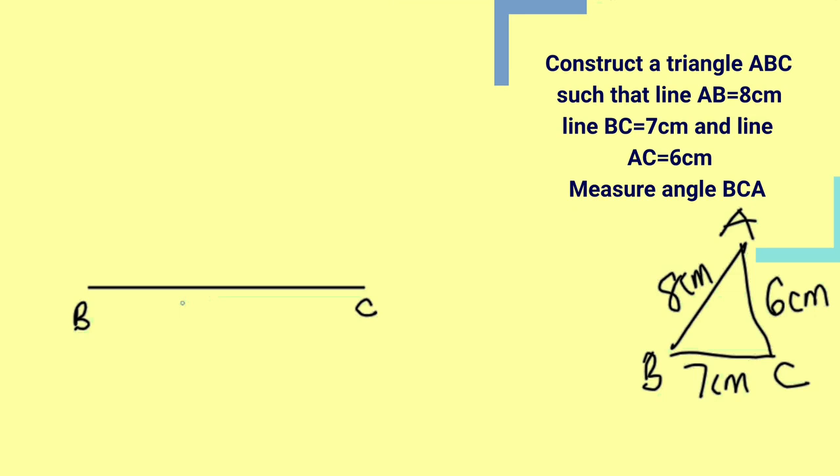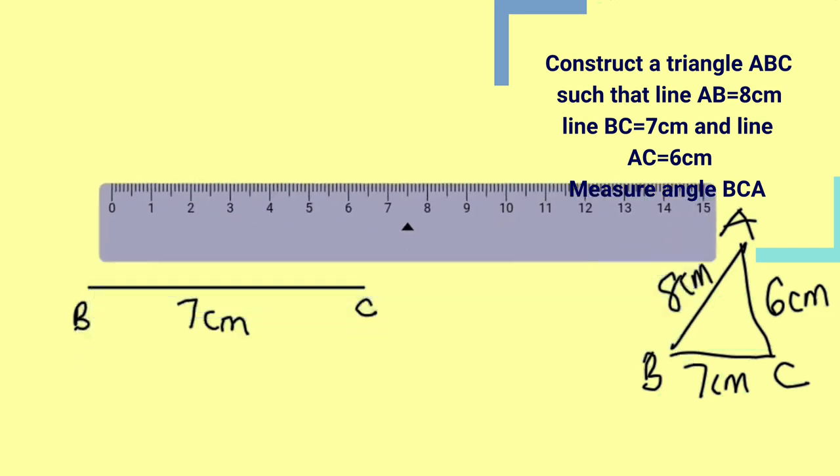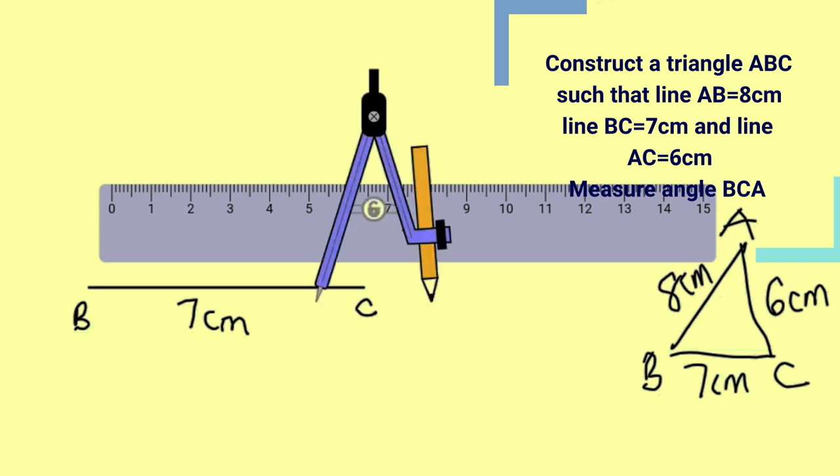Okay, remember that this is 7cm, bring out the ruler again, this is my ruler, then equally bring out your compass. This is the compass, we are going to place it on this ruler and measure 8cm, that is the length of AB.